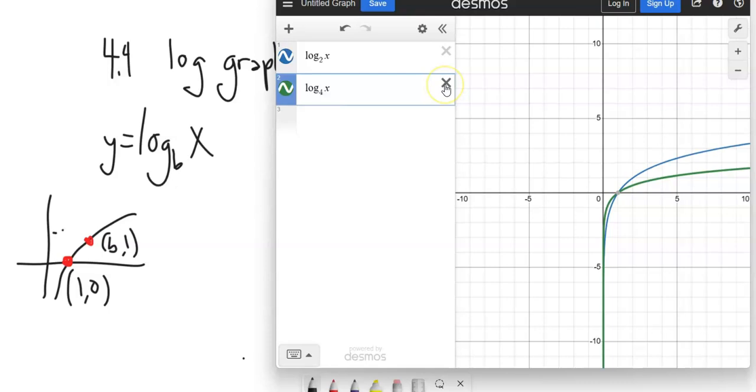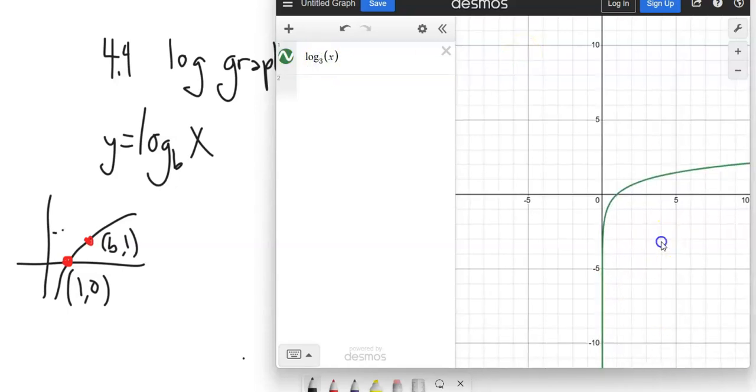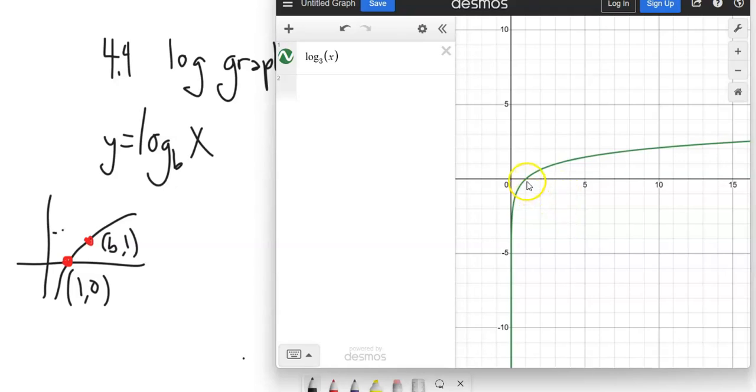Think about that then. Let's start to mess with these a little bit. Let's keep this log base 4 of x and think about what would happen if we added something inside the function. Think back to your transformations. Maybe I'll make this a log base 3 just so it's stretched out a little bit better. Still goes through that point (1,0), still goes through that point (3,1). The next point would be (9,2). Log base 3 of 9 is 2.